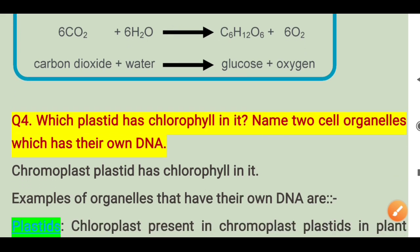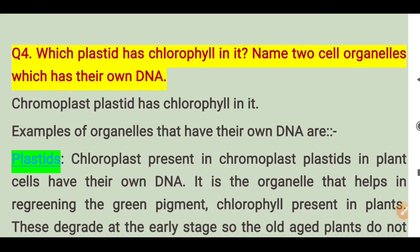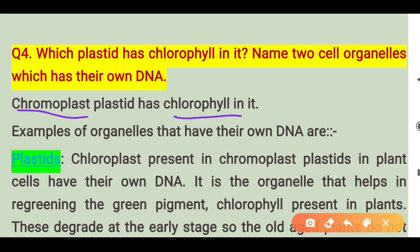Question number 4: which plastid has chlorophyll in it, and name two cell organelles which have their own DNA. Chlorophyll is present in the chloroplast, which is a type of Chromoplast. The two cell organelles that have their own DNA are plastids (chloroplast) and mitochondria.